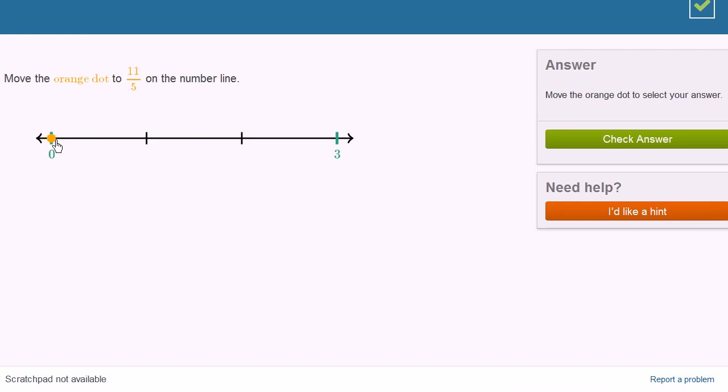Or we could just think of it in terms of fifths as an improper fraction. 1 fifth, 2 fifths, 3 fifths, 4 fifths, 5 fifths is a whole. 6 fifths, 7 fifths,